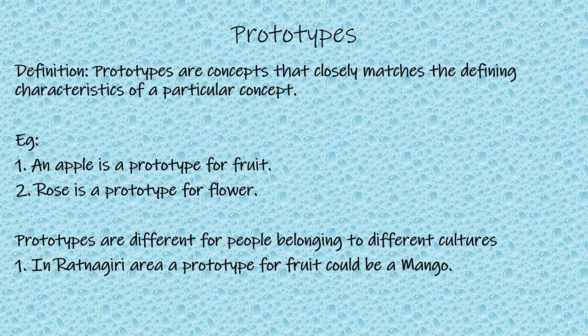Mangoes are more popular among the masses in Ratnagiri as compared to an apple. Hence, in the Ratnagiri area, a prototype for fruit could be a mango rather than an apple. This shows that culture plays a very important part when it comes to prototypes.